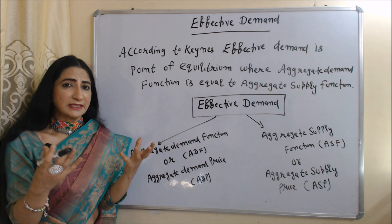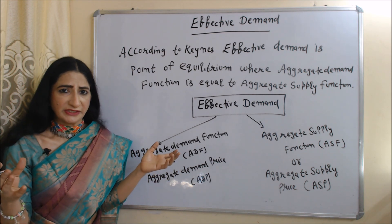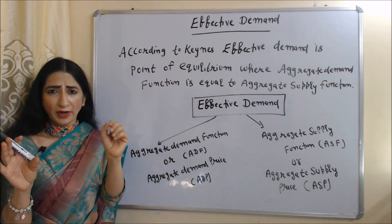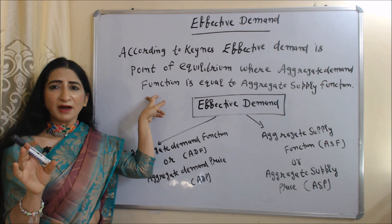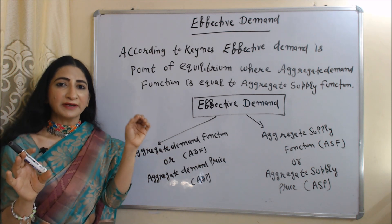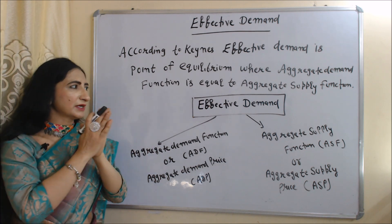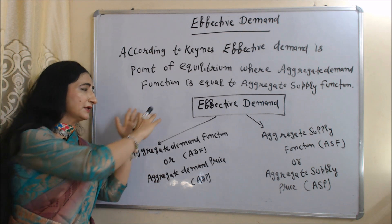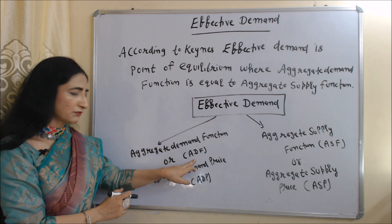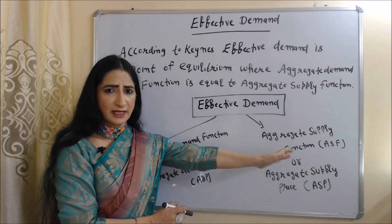Keynesian theory completely depends on effective demand — effective demand plays a very important role in Keynesian theory. According to Keynesian theory, effective demand is the point of equilibrium where the aggregate demand function is equal to the aggregate supply function. Effective demand can be determined by two functions: first is the aggregate demand function (ADF) and second is the aggregate supply function (ASF).